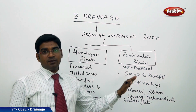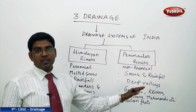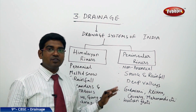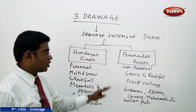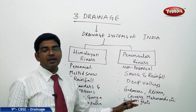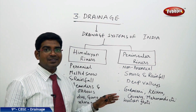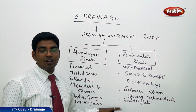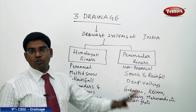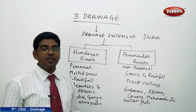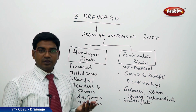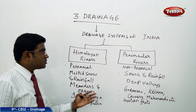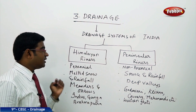In contrast to the Himalayan rivers, Peninsular rivers form deep valleys. The important rivers of the Peninsular Plateau are Godavari, Krishna, Kaveri, and Mahanadi. All of these originate in the Western Ghats, flow towards the east, and fall into the Bay of Bengal. These are the two major broad divisions of the river system of India: the Himalayan rivers and the Peninsular rivers.